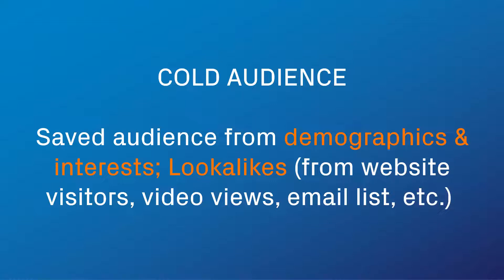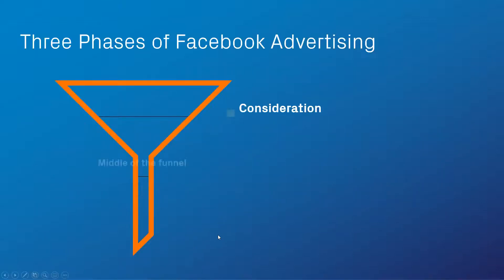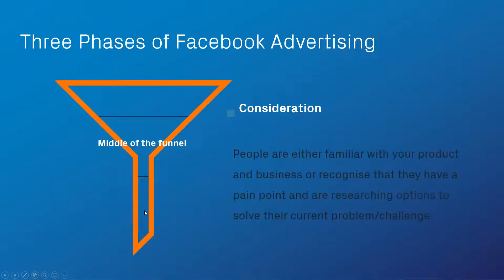You can also use look-alike audiences — look-alikes from website visitors or video viewers. These are cold audiences. The next stage is the consideration stage — this is typically what consumers think of when they hear the word 'advertising.' In consideration, people are either familiar with your product or recognize they have a pain point and are searching for options. Remember, we don't straight away go and buy something — unless it's an urgent situation like a blocked toilet, where Google Ads make more sense.